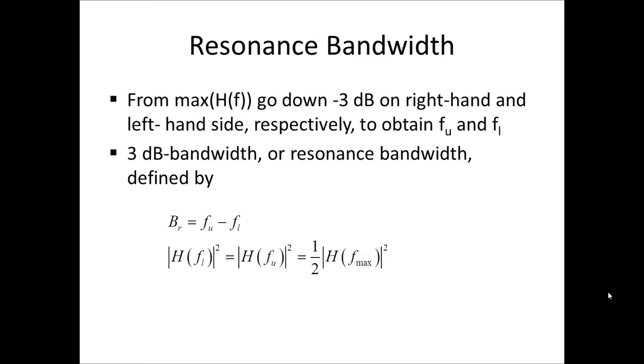we obtain two frequencies, an upper frequency above the resonance, and a lower frequency FL below the resonance. The 3 dB-bandwidth, or resonance bandwidth, is then defined as BR being the difference of the upper and the lower frequency. And the upper and lower frequencies are defined by the 3 dB, so the magnitude squared of the lower frequency equals the magnitude squared of the upper frequency, which is one-half times the frequency response maximum squared.